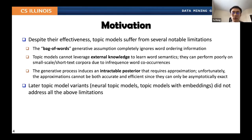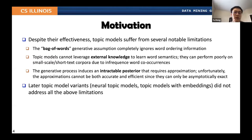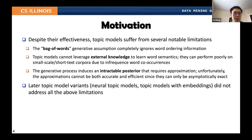Despite the effectiveness of topic models, they suffer from several notable limitations which we are aiming to address. The first limitation is that the generative assumption of topic models is bag of words, which completely ignores ordering information. Secondly, topic models cannot leverage external knowledge. Thirdly, the generative process induces intractable posteriors that are hard to compute, so approximations must be adapted. Later topic model variants incorporating neural networks and embeddings did not address all of the above limitations.